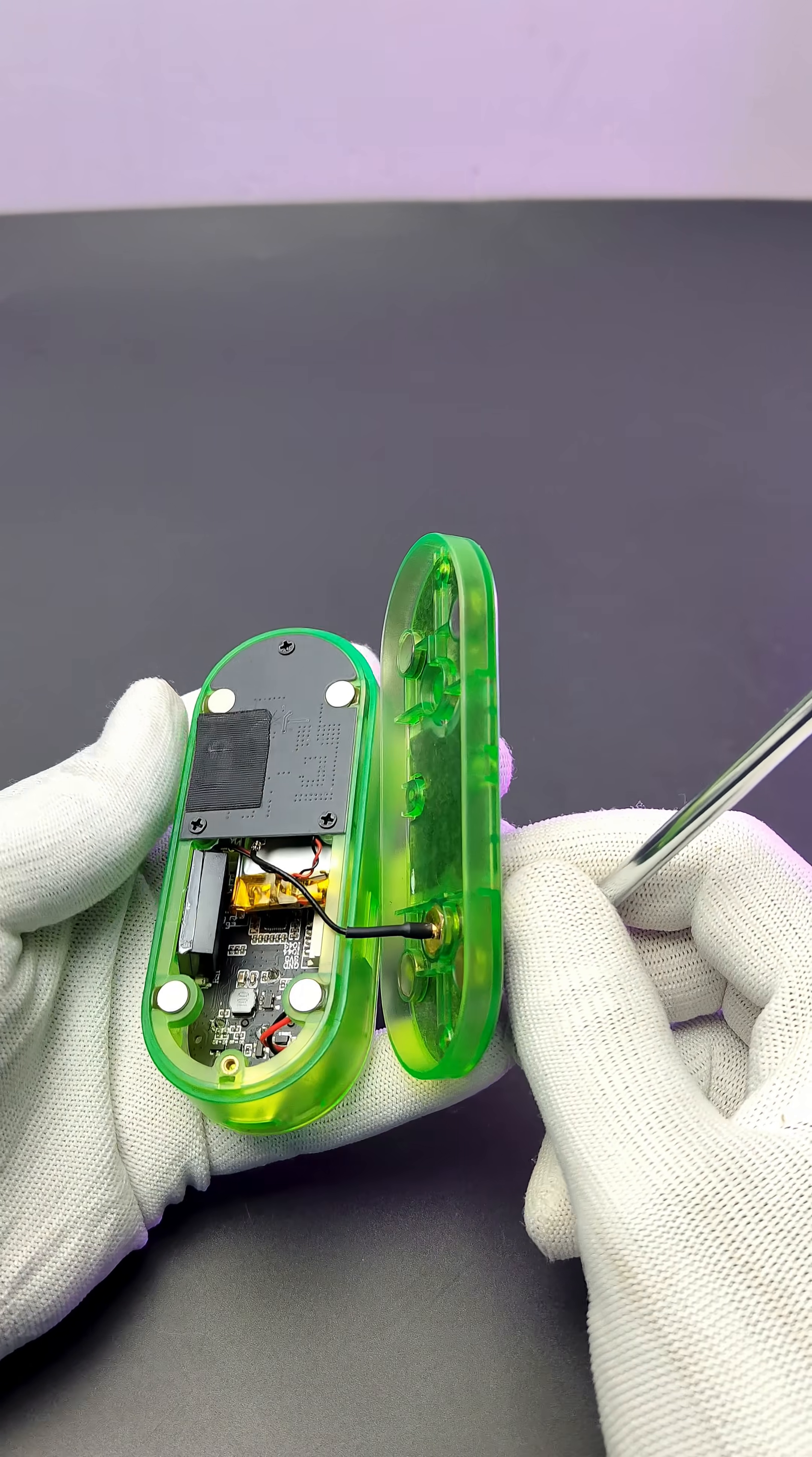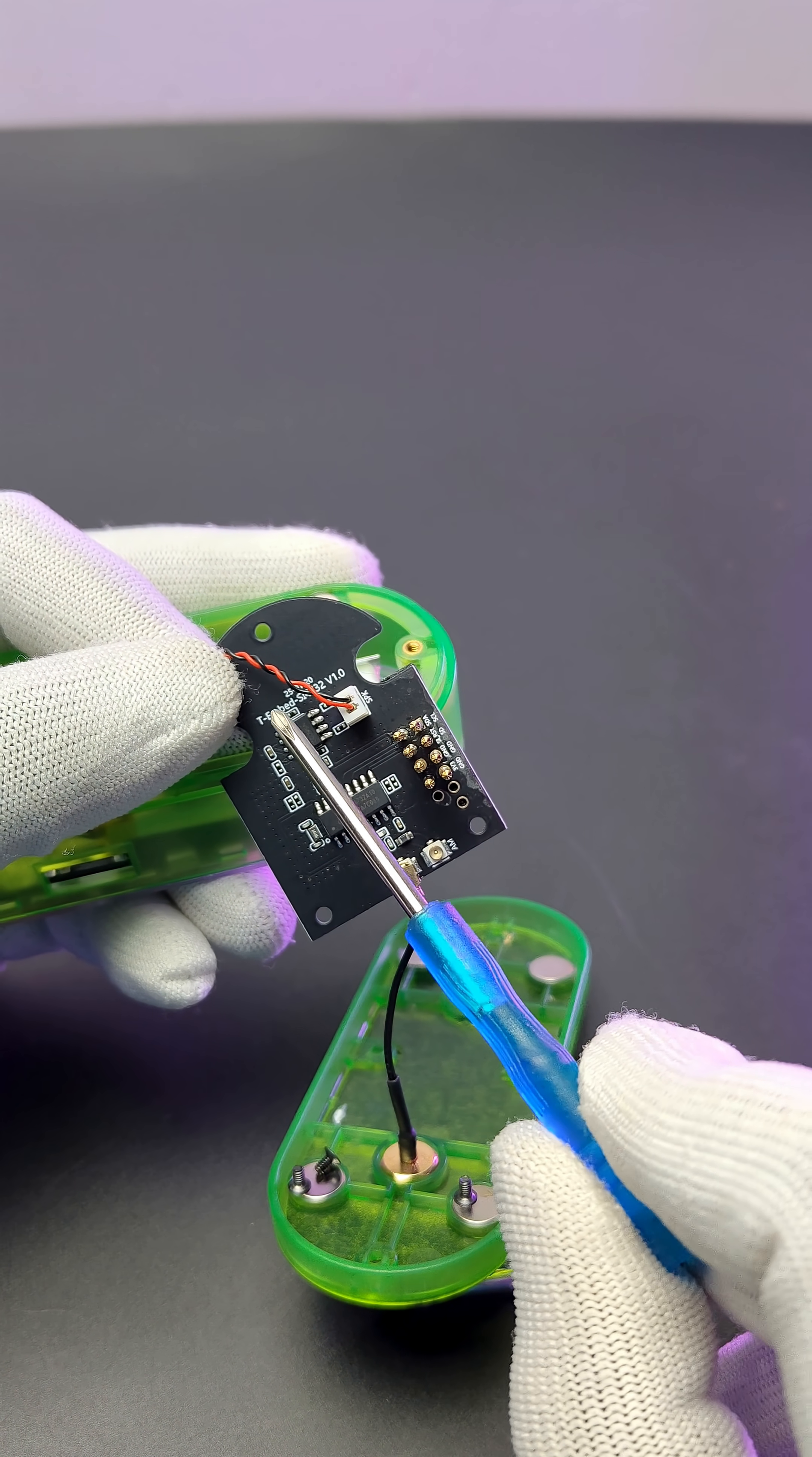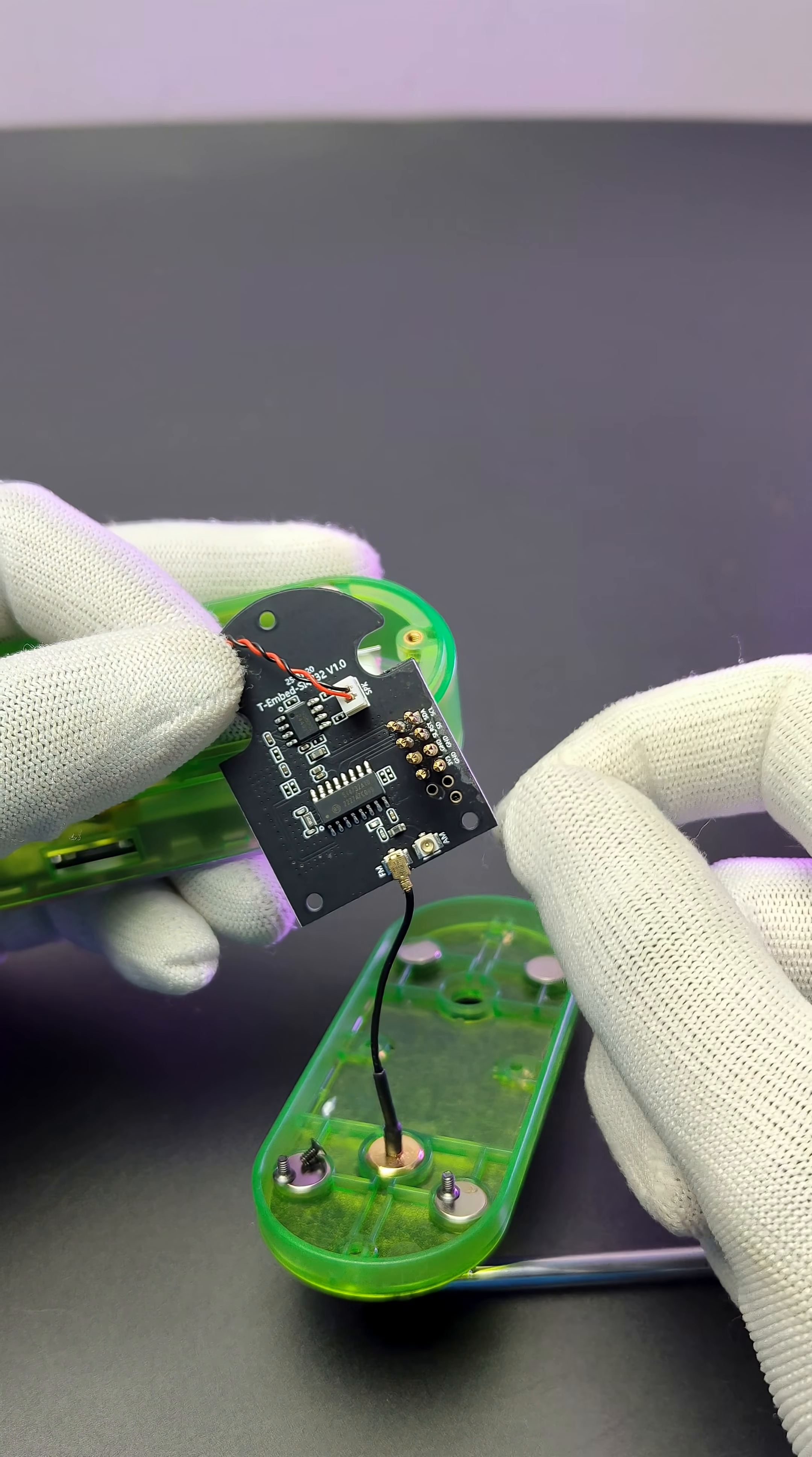After opening the back side, we can see the SI4732 radio module. It is designed for AM, FM, SW, LW and other broadcast bands. It has high sensitivity and low power consumption and works based on digital signal processing or DSP.